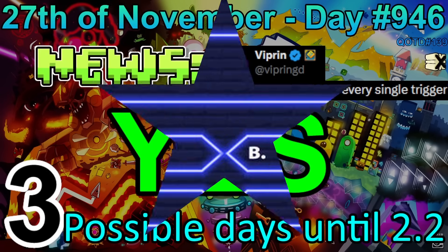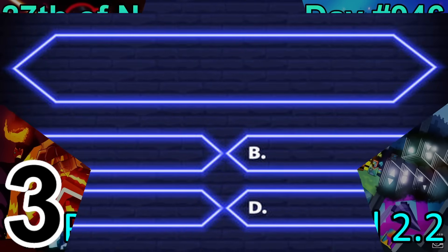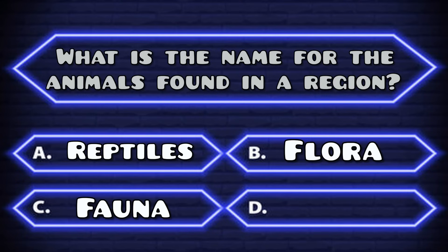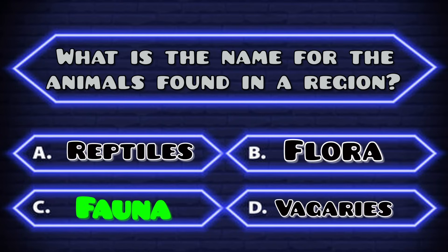Moving on to the quiz: what is the name for the animals found in a region? Is it A. Reptiles, B. Flora, C. Fauna, or D. Vyjaris? You got 5 seconds. And the right answer is C. Fauna — congratulations!